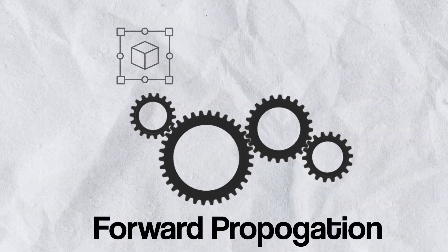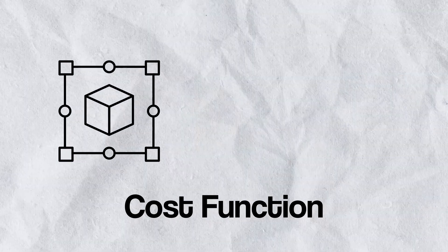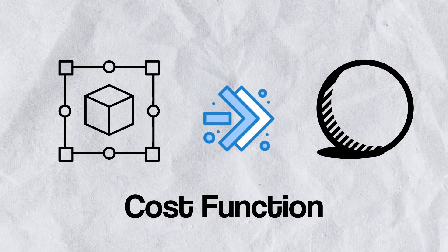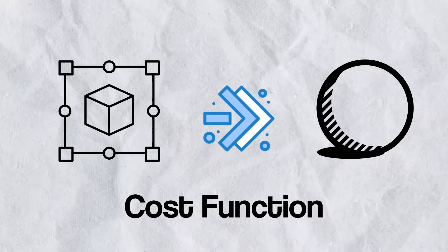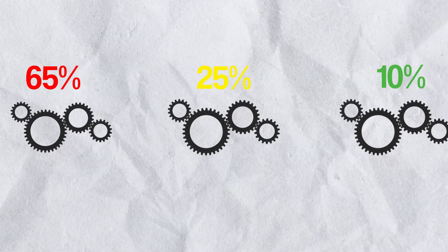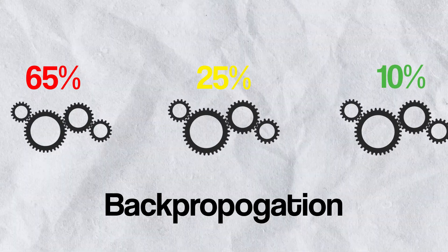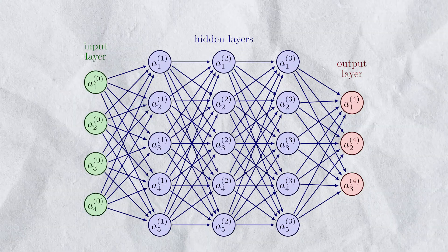He continues to repeat the following steps: forward propagation, pushing the cube through the machine; cost function, where he calculates how close the output is to a perfect sphere; and finally, backpropagation, where he goes back into the gears and updates them. This machine, as you may have guessed by now, is a neural network.